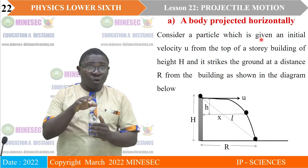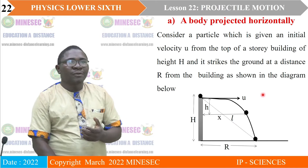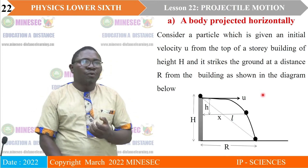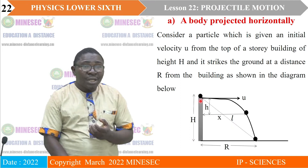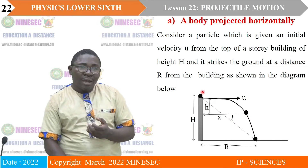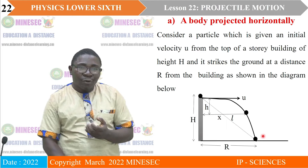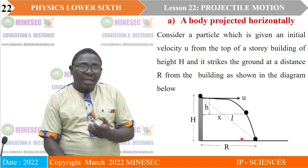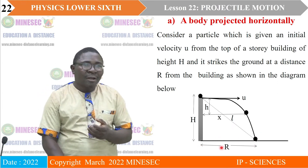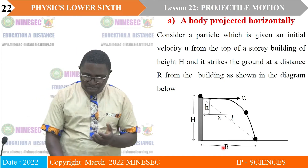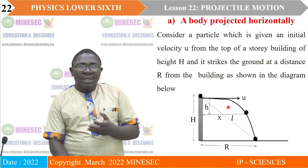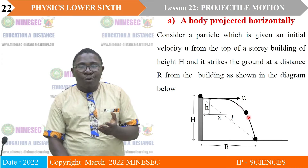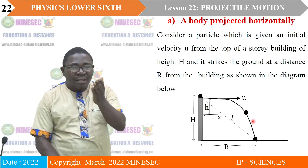We look at case A: a body projected horizontally. Consider a particle projected with an initial horizontal velocity u from the top of a building of height h. It does not fall straight down but moves in a curve, covering both a vertical distance and a horizontal distance, striking the ground at a distance r from the building as shown in the diagram. At different points along that curve, we can determine the distance, velocity, and acceleration.